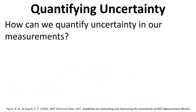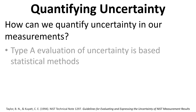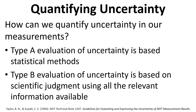Next we want to ask the question: how can we actually quantify the uncertainty in our measurements? There are two approaches — a Type A evaluation and a Type B evaluation — and they have different approaches in the way that we evaluate the uncertainty in our measurements. We'll go into some more detail on each of these approaches.